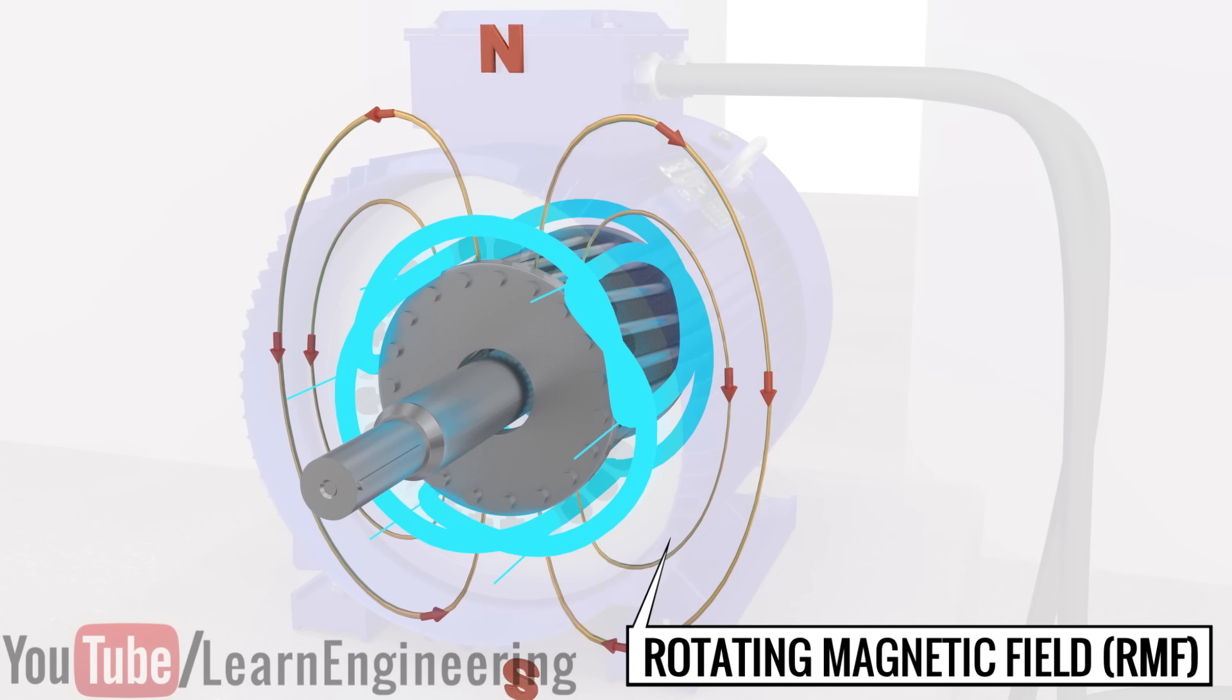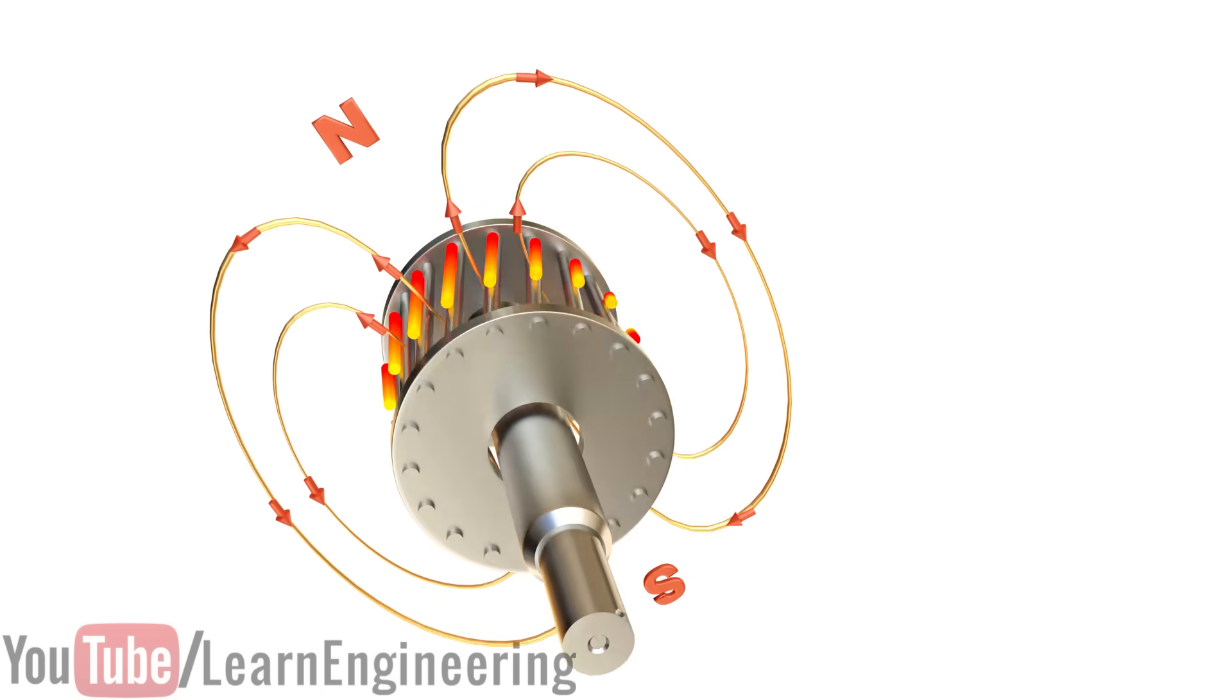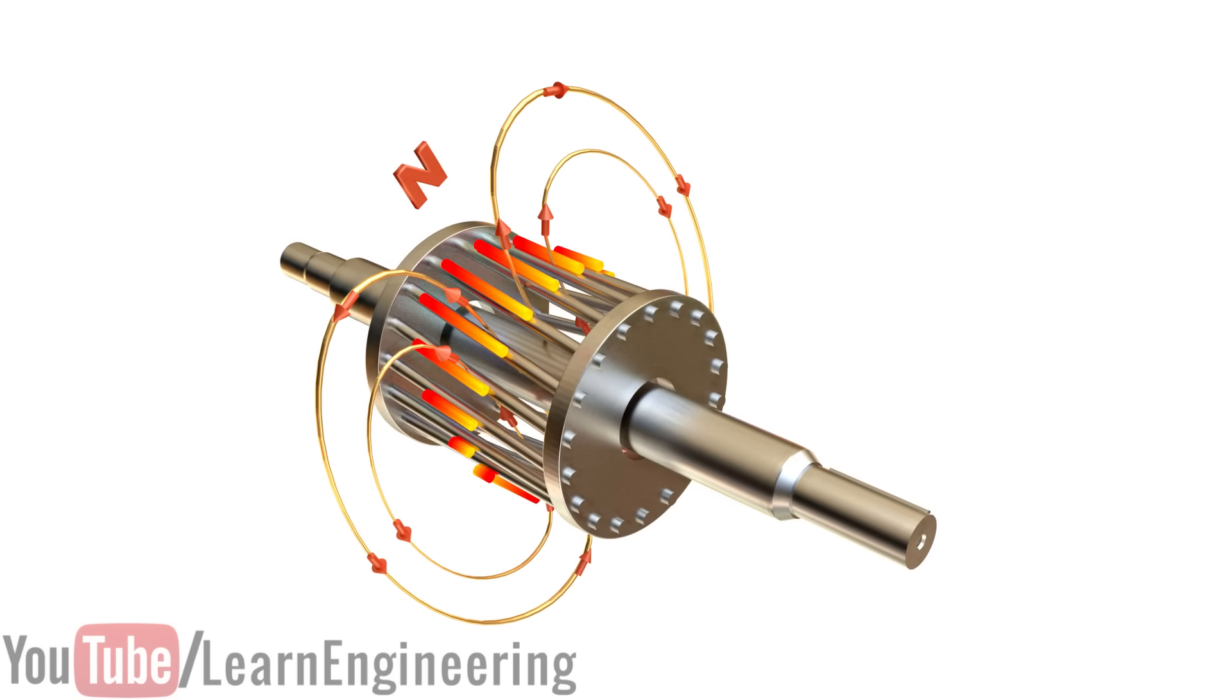This RMF cuts the rotor bars. According to Faraday's law of electromagnetic induction, an electromotive force is induced in the bars. Because the rotor bars are short-circuited by the end rings, this induced EMF generates a current to flow through the rotor bars.